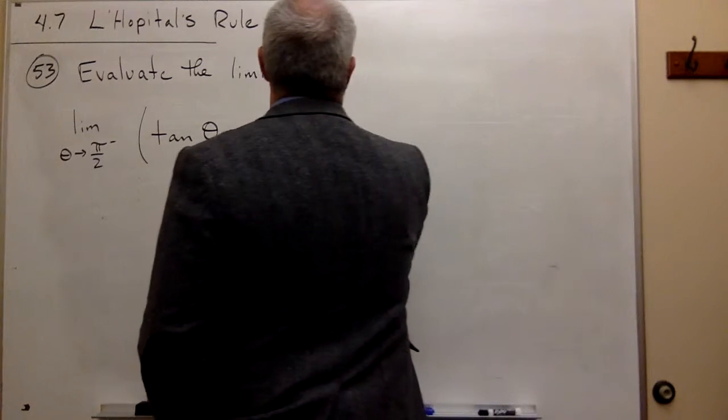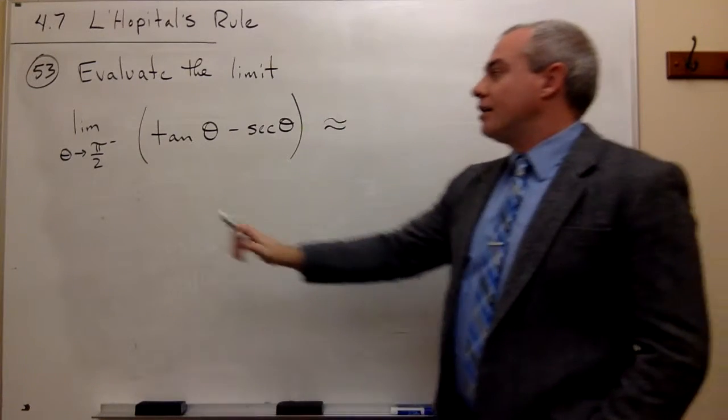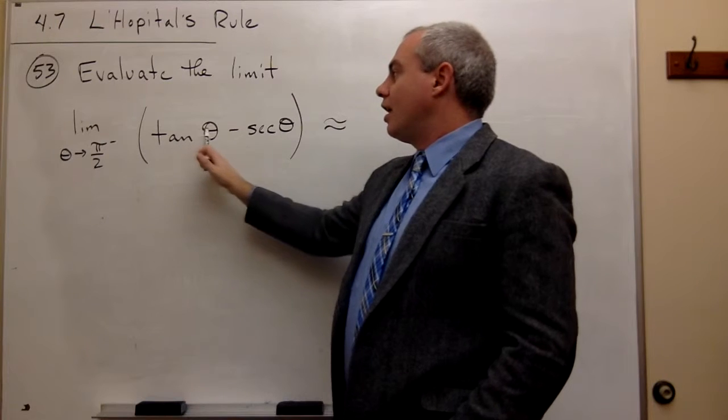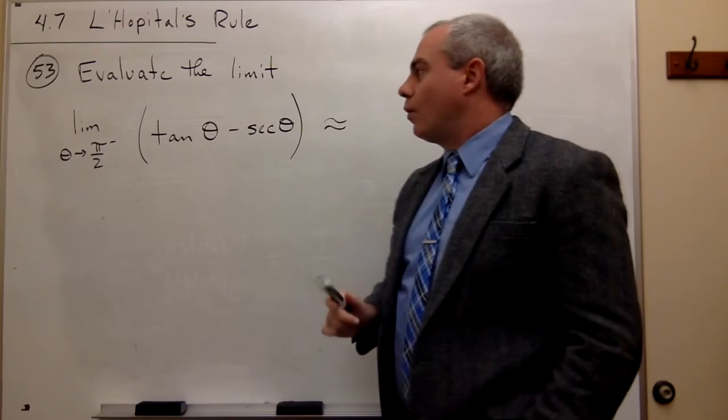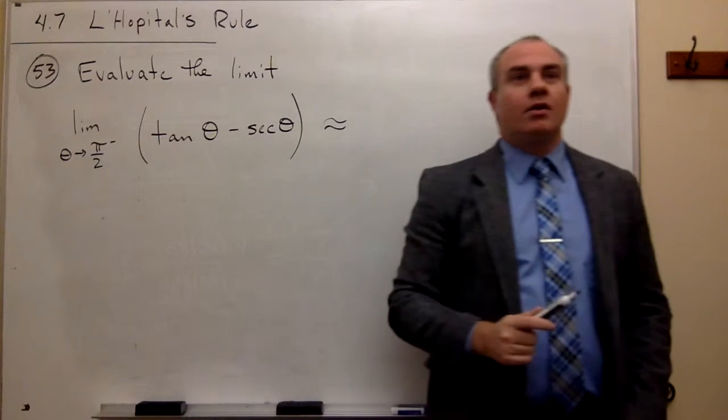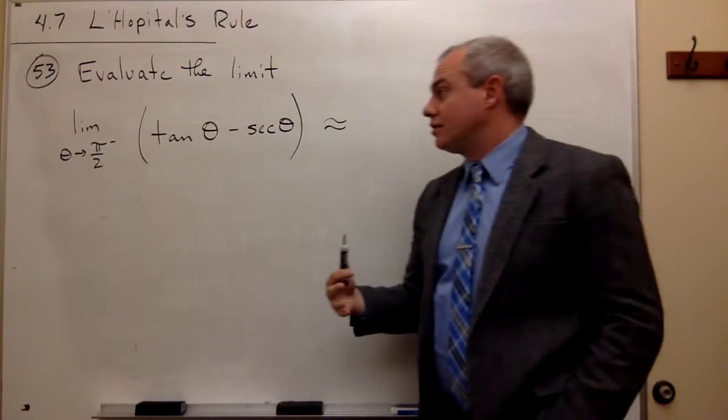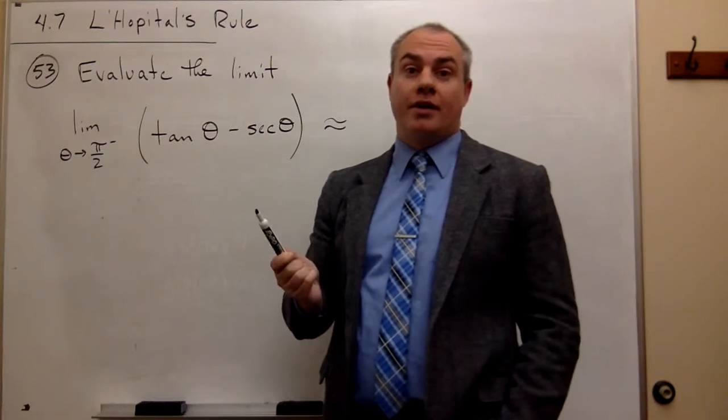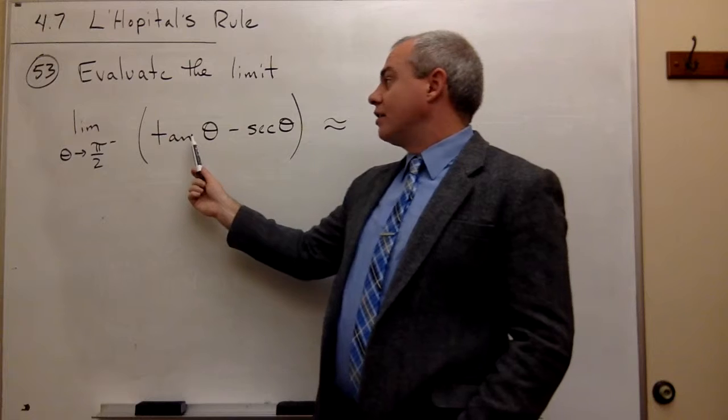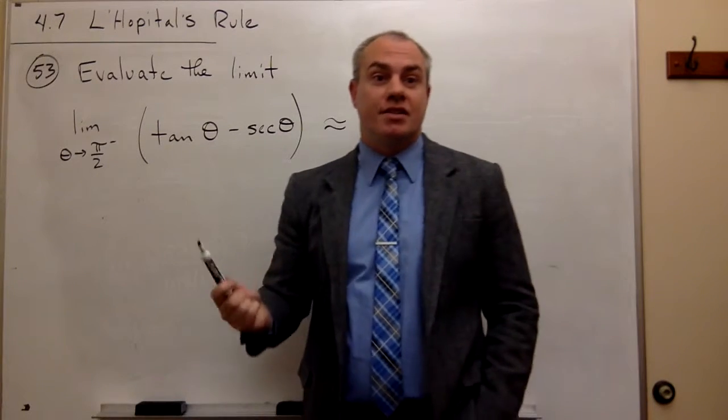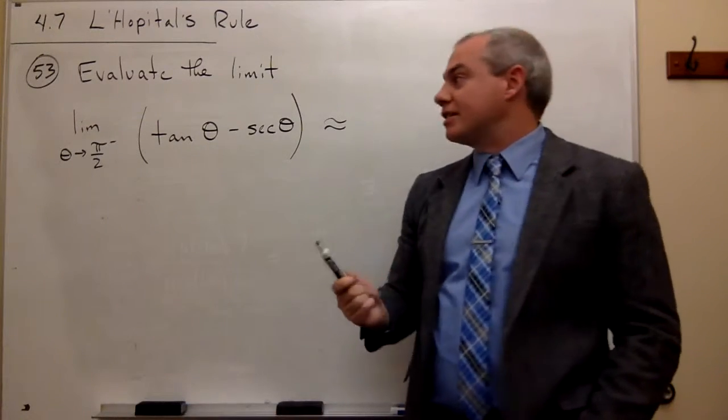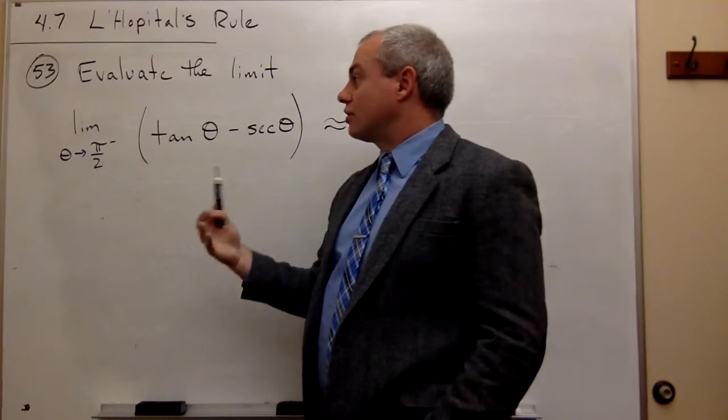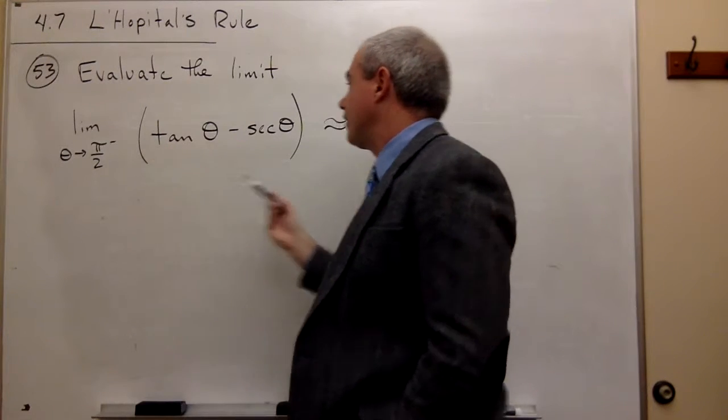If I just, as is, plug in pi over 2 to this thing, well, tangent of pi over 2, what does that look like? Tangent is sine over cosine, right? And sine of pi over 2 is 1, and cosine of pi over 2 is 0. Now we're coming at this thing from the left side, so it is certainly positive. So it's positive infinity.